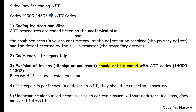Now let us look at the guidelines. The first guideline is coding by area and size — ATT procedures are coded based on the anatomical site, so we have to choose the code based on the anatomical site. The size used is the combined area in square centimeters of the defect to be repaired — that is the primary defect — and the defect created by the tissue transfer, which is the secondary defect. We have to combine the primary and secondary defects in square centimeters.